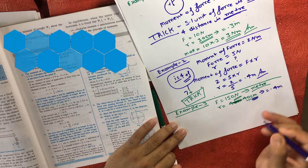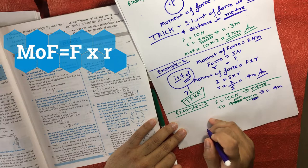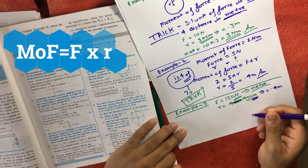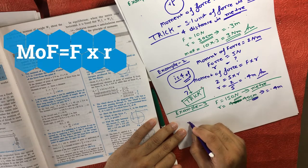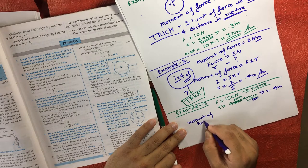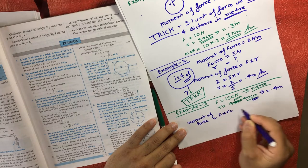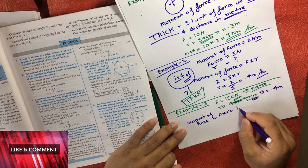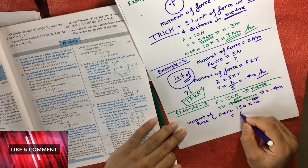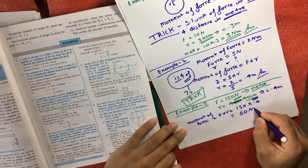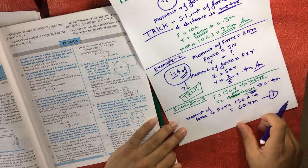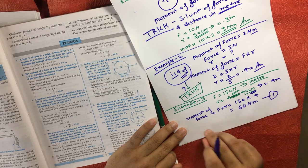In the first scenario, we need to find the moment of force. The formula is: Moment of Force = F × r. That gives us 150 × 0.4, which equals 60 newton meter. This is Equation 1.